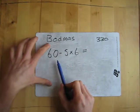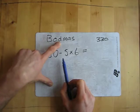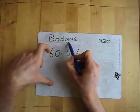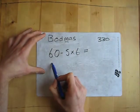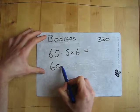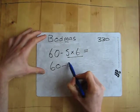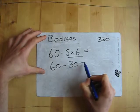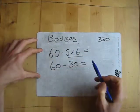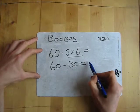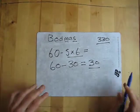So is there any brackets? No. Any divides? No, there's a multiply. So I must do the multiply first before I do subtraction. So I do 60 take away, and then I must do this part here, 5 times 6, which is 30. And then I obviously do the subtraction next because it's after the multiply. So we'll get a very different answer from that one.